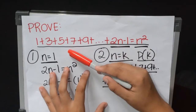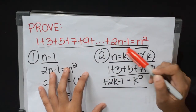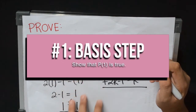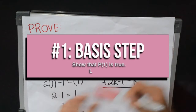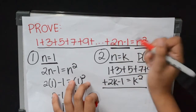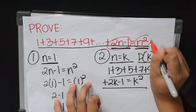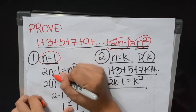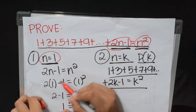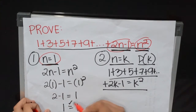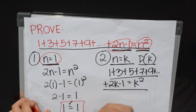For our first example, we need to prove that 1 plus 3 plus 5 plus 7 plus 9 plus ... plus (2n minus 1) is equal to n squared. The first step is the basis step or verification, where we show that P(1) is true by letting n equal 1. We need to show that 2n minus 1 equals n squared when n equals 1. Substituting n with 1, the equation becomes 2(1) minus 1 equals 1 squared, so 2 minus 1 equals 1, therefore 1 equals 1, which is true.